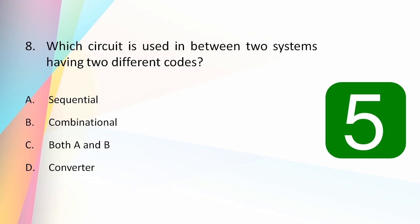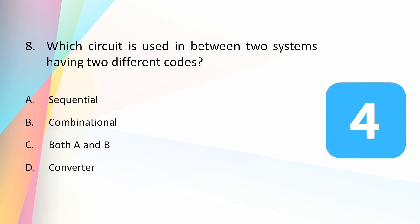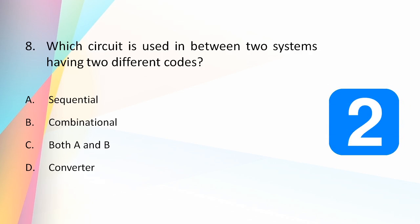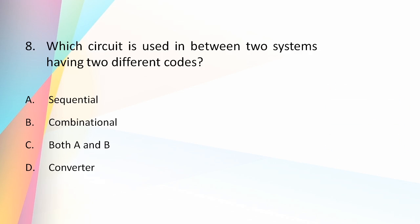Which circuit is used between two systems having two different codes: sequential, combinational, both, or a converter? The answer is a converter. Neither sequential nor combinational circuits are used for converting between two different codes — we need a dedicated converter for code conversion.